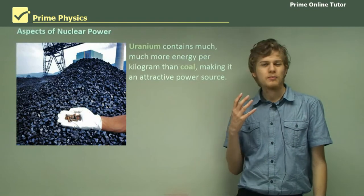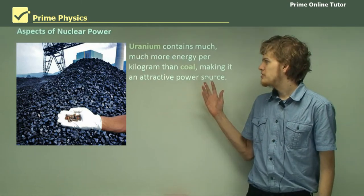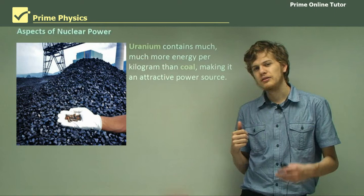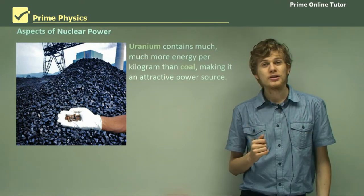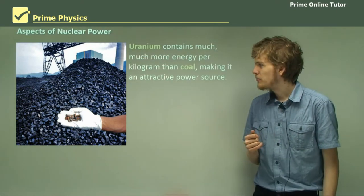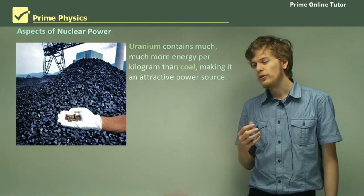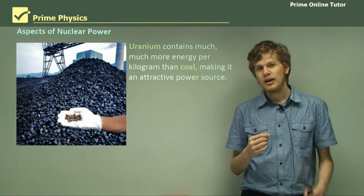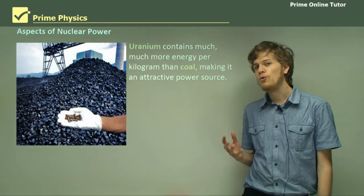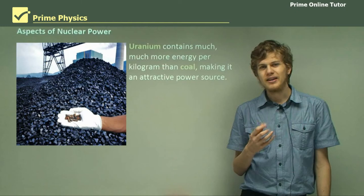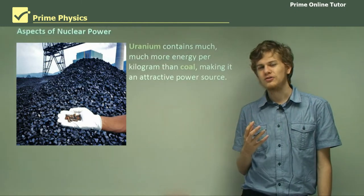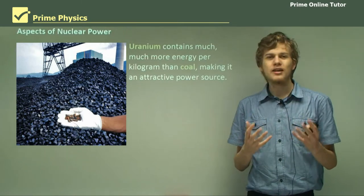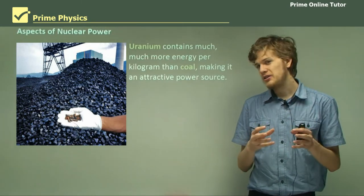The reason people use uranium instead of coal is because it contains much more energy per kilogram than coal, making it a far more attractive power source. As illustrated in a photograph, the huge mountains of coal in the background contain only the same amount of power as the few pellets of uranium in the foreground. This demonstrates uranium's superior energy density — that is, the amount of energy it contains per unit mass.